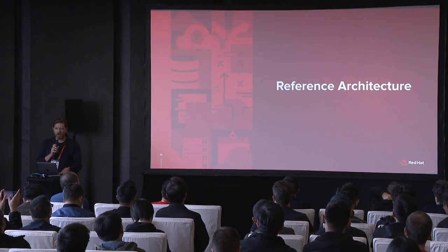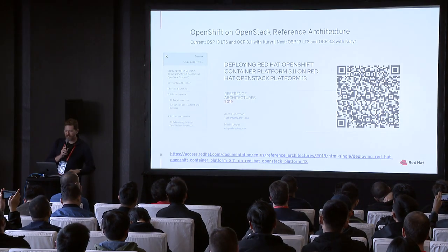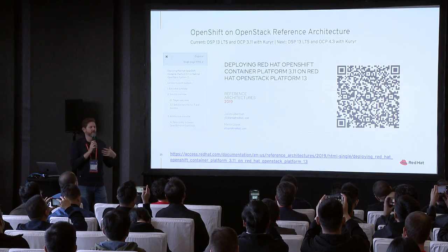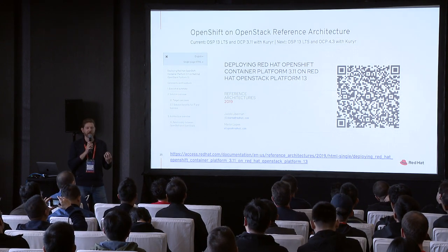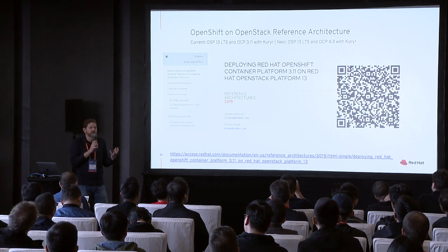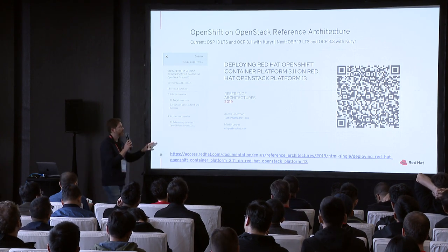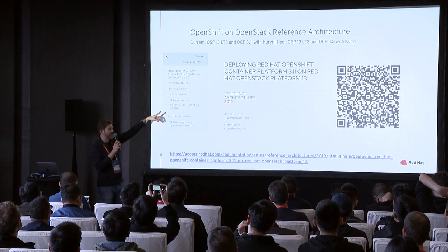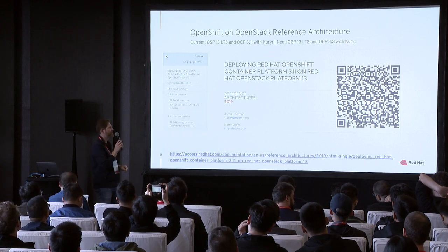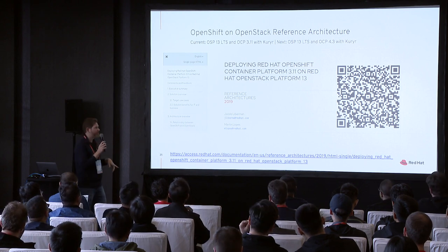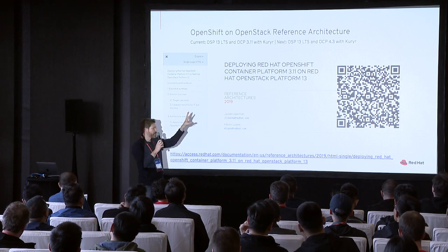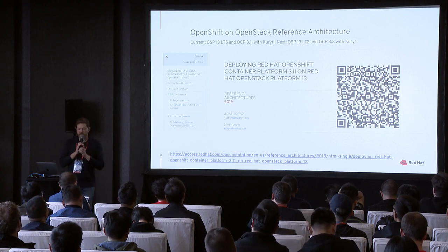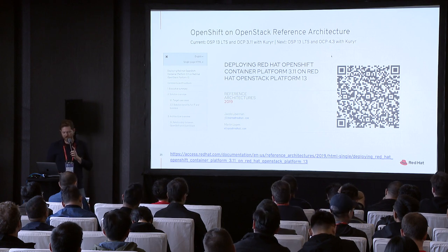We also published a reference architecture. We said, people are doing this, so why don't we make some recommendations for good practices that you can use as the basis for your own architecture. We did it with OSP 13 — that's OpenStack Queens — and OpenShift 3.11, which is Kubernetes 1.11. We're working on a new one as well. In this document you'll find a lot of advice on how to do the integration, how the services work with each other in detail.